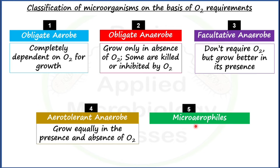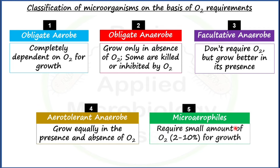Microaerophiles are those microorganisms which require only a small amount of oxygen — as their name indicates, 'micro' stands for small. When compared to the atmospheric oxygen level of 21%, the requirement of microaerophiles is restricted to only 2 to 10%, which is the range of oxygen concentration preferred by this group.